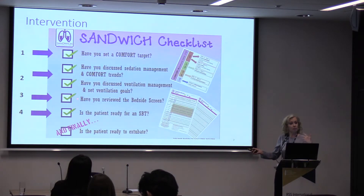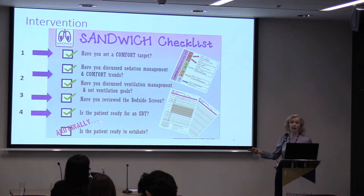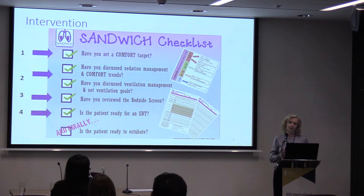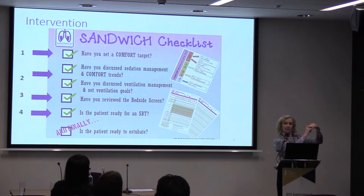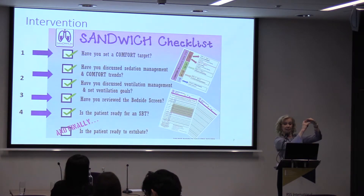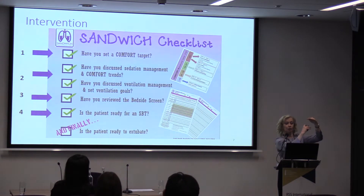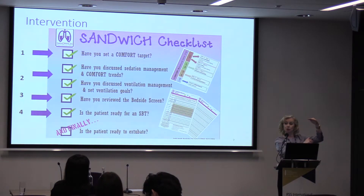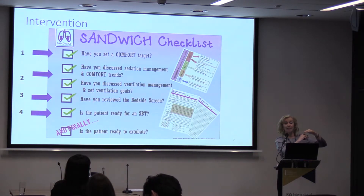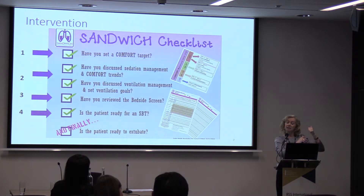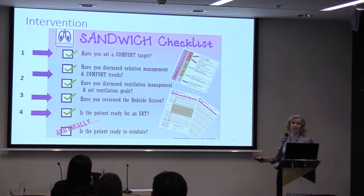The bedside nurse performs a daily check of five simple criteria on a checklist. If those criteria are met — shown in green — they must approach a senior member of staff to conduct a spontaneous breathing trial. Instead of weaning down gradually, the child goes immediately to a lower level for a few hours to see if they can breathe at that level. If they can, they can be extubated — the tube removed — getting them off the ventilator much earlier.